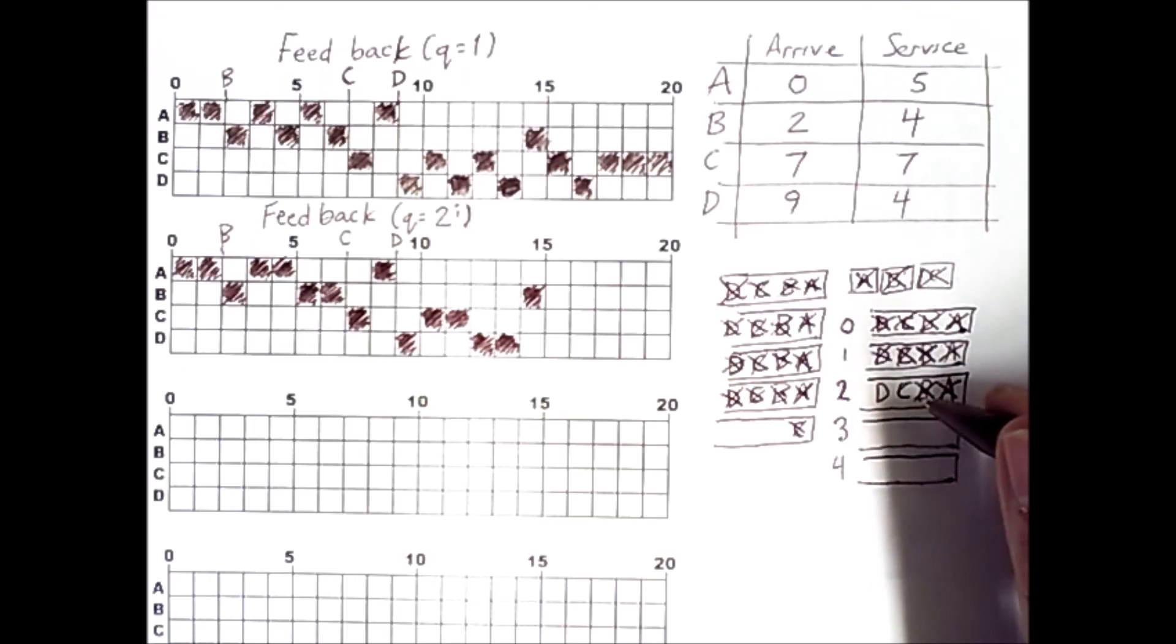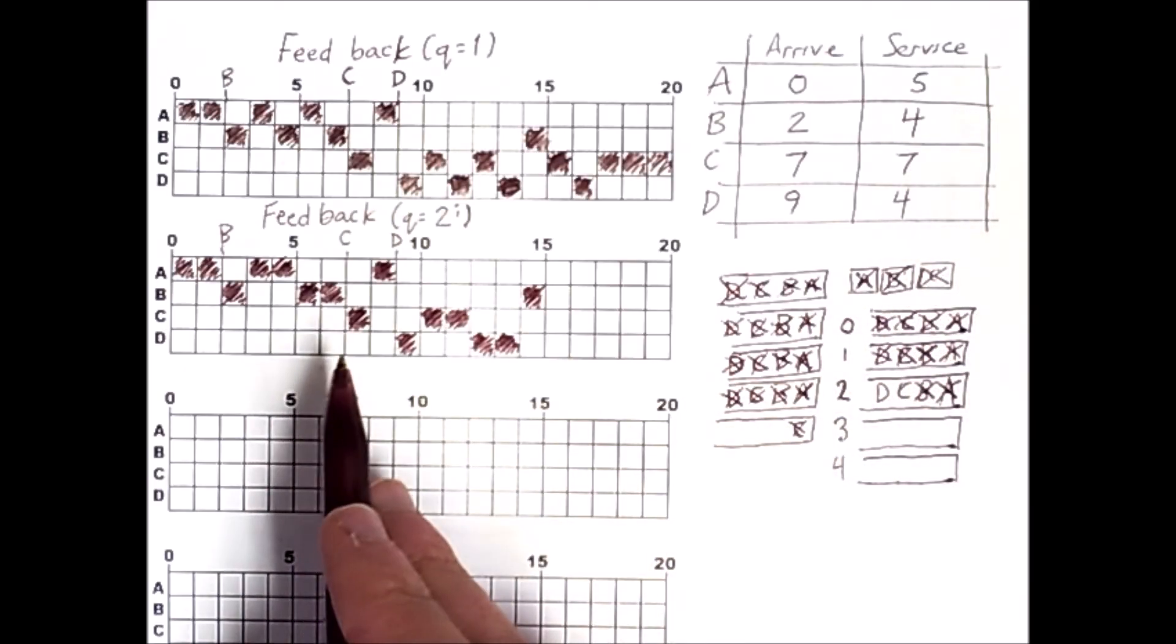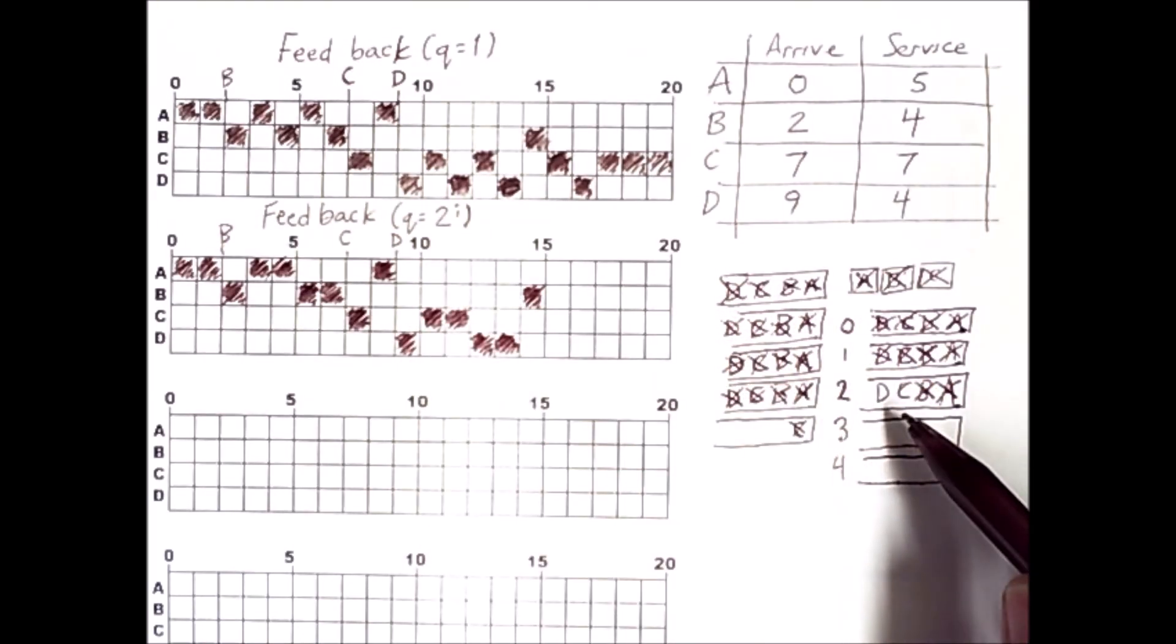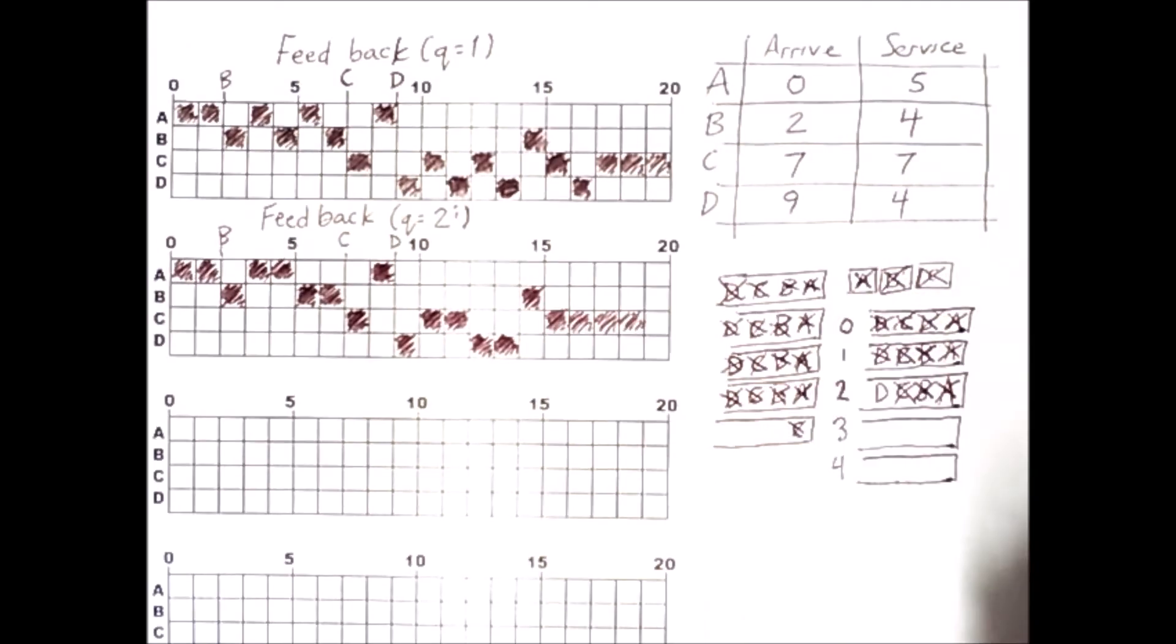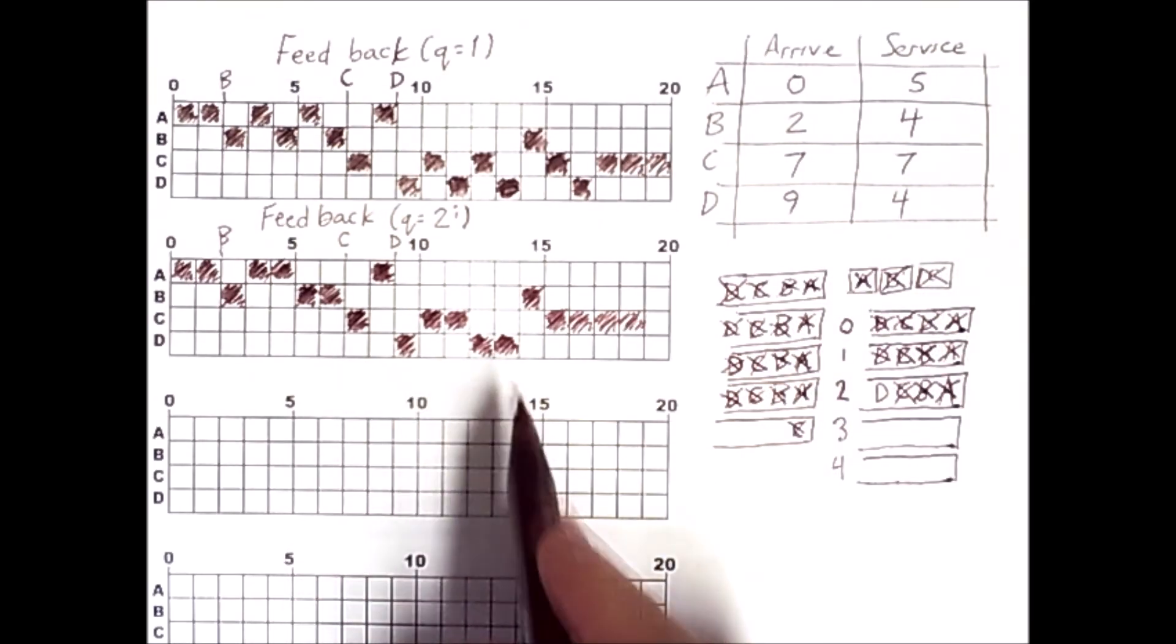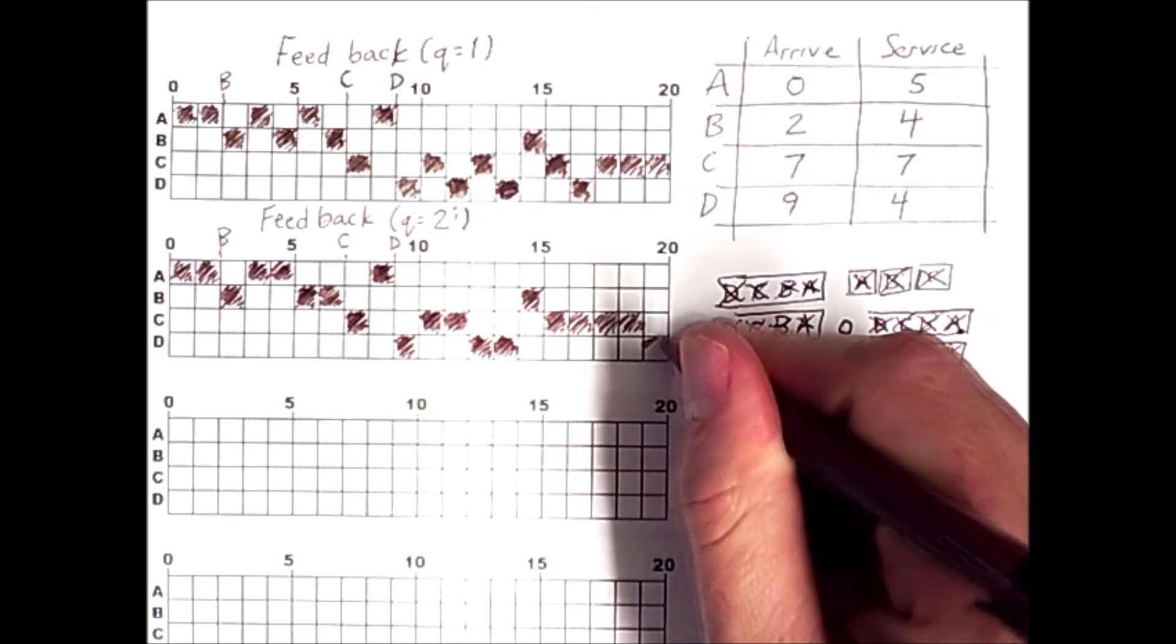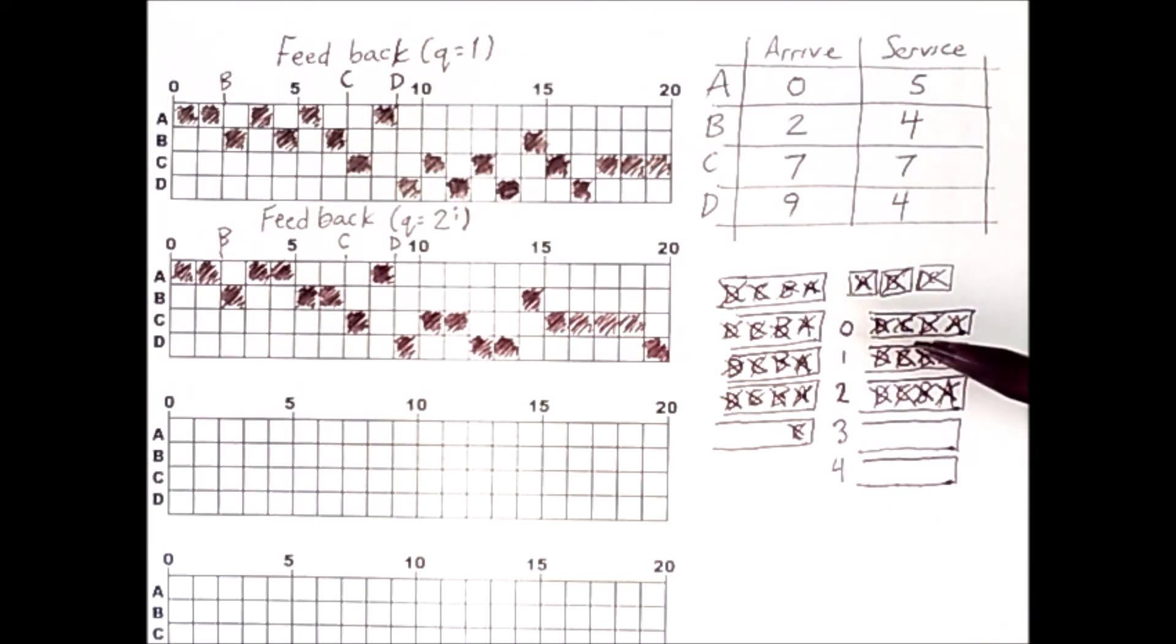Now C can run. And C has already run for 1, 2, 3 units. 2 to the 2 is 4. So C runs 4 more units and completes. And then finally D has run for 1, 2, 3 units. It has 1 left. So it comes off. It runs. And it is finished too. So although processes that have been in the system a long time still have to wait for new processes to run first, at least the processes that have been around for a while get to run for a longer period of time when they eventually do run. So that is an advantage of this alternative feedback scheme.